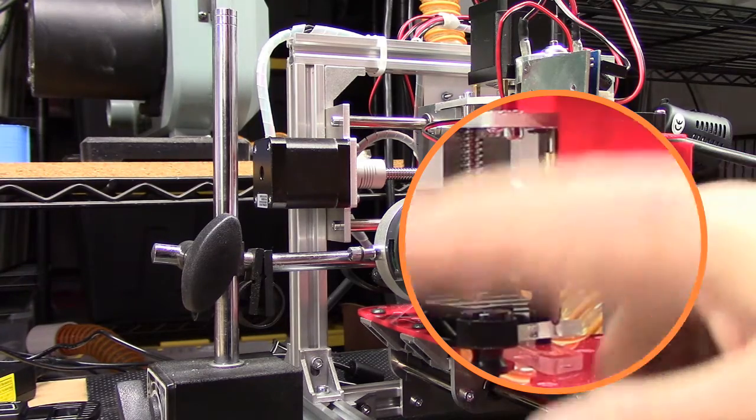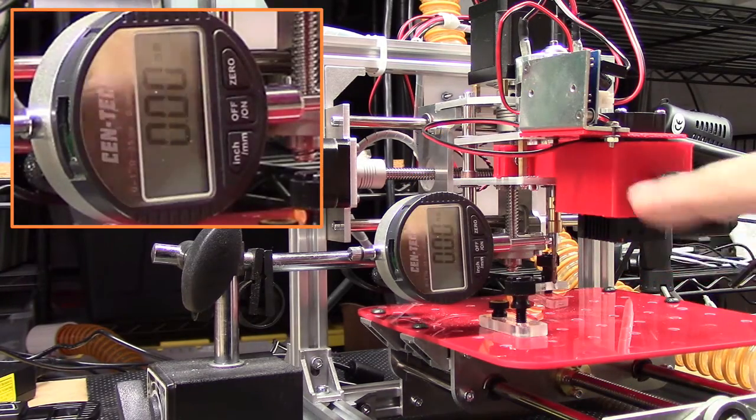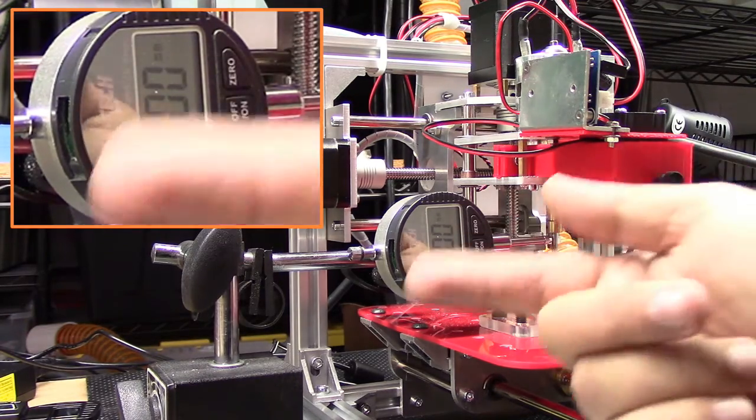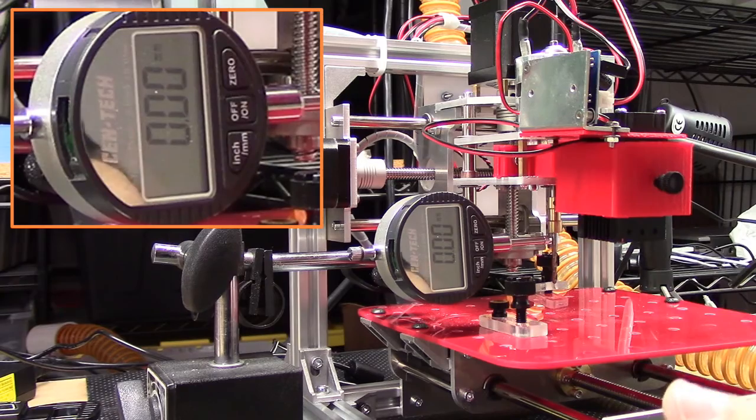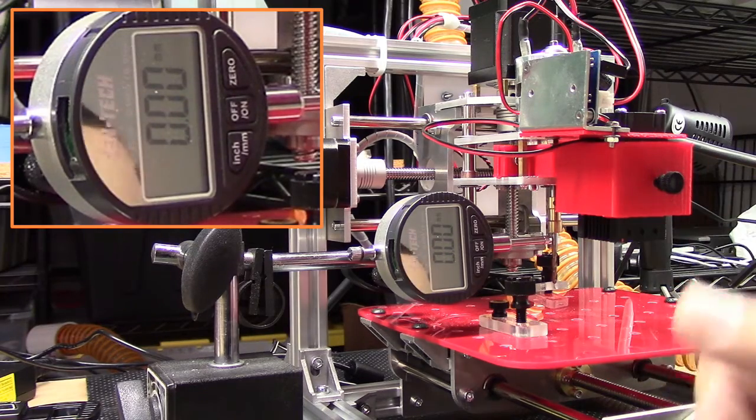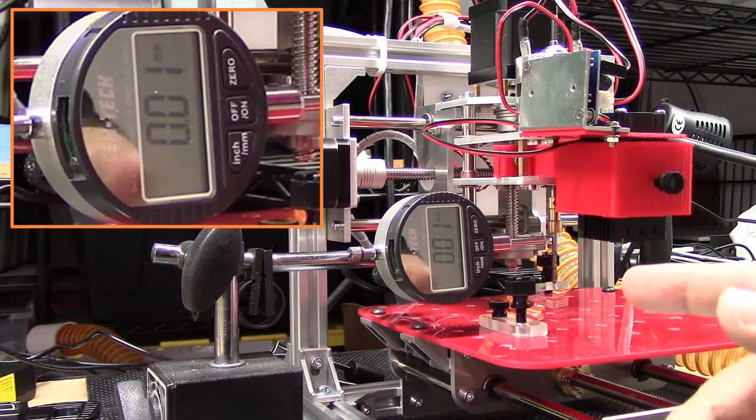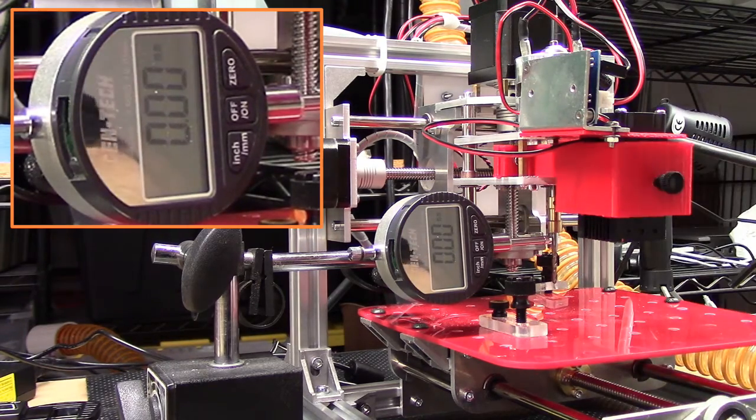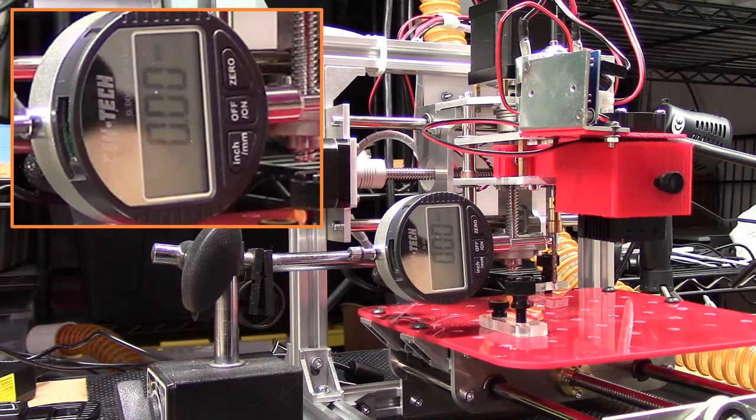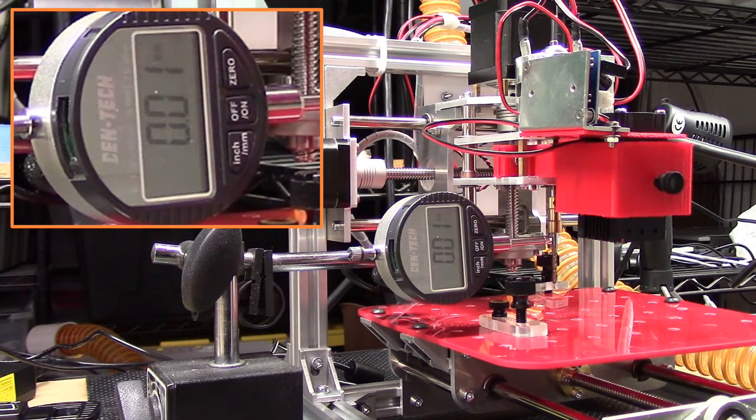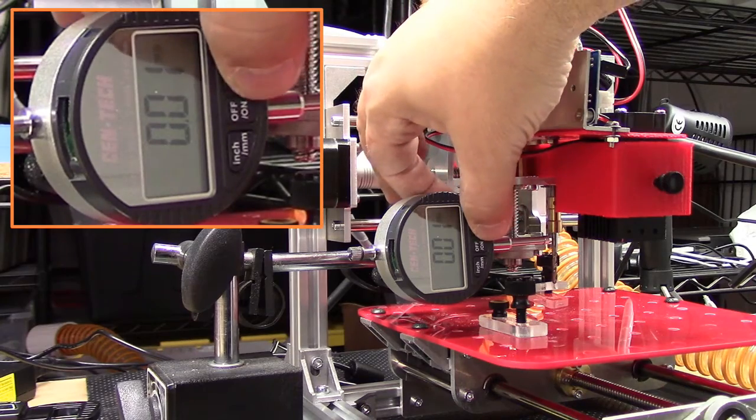The collar has two set screws, one on either side 180 degrees from one another. I've got an eighth inch two flute end mill mounted up in there and I've got the gauge generally zeroed out. You can see just sitting here it's flopping a little bit between one and zero. I'm going to try zeroing it out again.